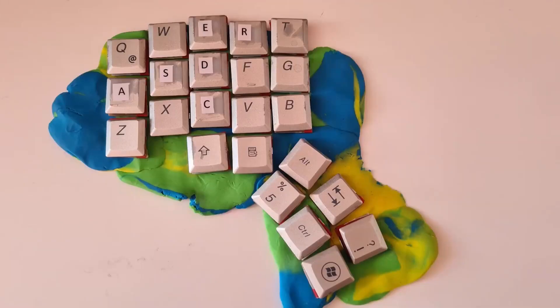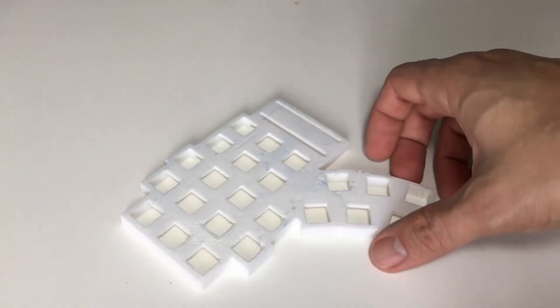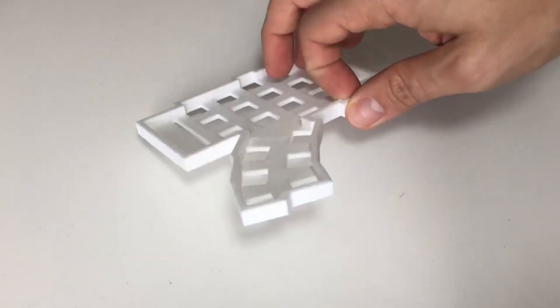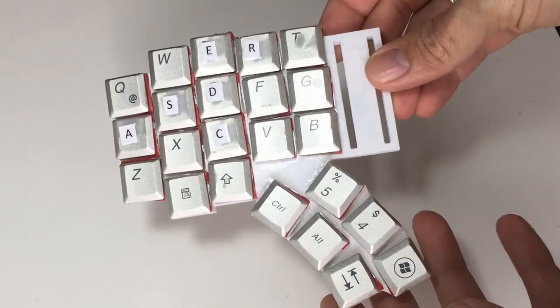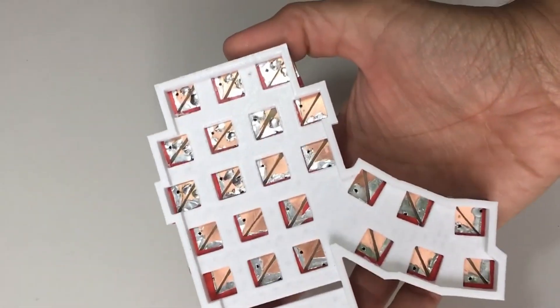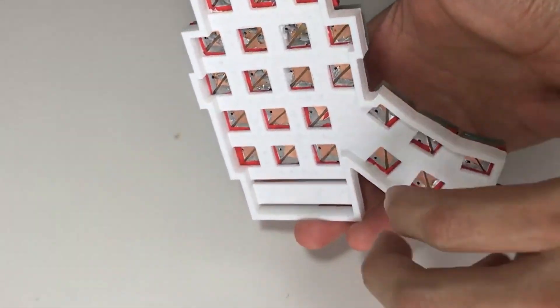I put the keys on clay with the shape and order that I want my keyboard to have. And then I printed a 3D mold to place the keys. Then I glue down each key over the mold using instant adhesive. And this is the final result.